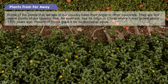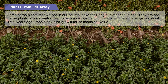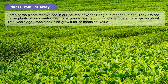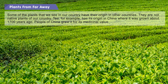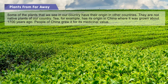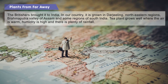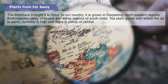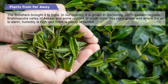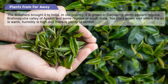Plants from far away: Some plants we see in our country have their origin in other countries and are not native plants. Tea, for example, has its origin in China, where it was grown about 1700 years ago for its medicinal value. The British brought it to India, where it is grown in Darjeeling, north-eastern regions, Brahmaputra Valley of Assam, and some regions of South India. Tea plants grow well where the air is warm, humidity is high, and there is plenty of rainfall.